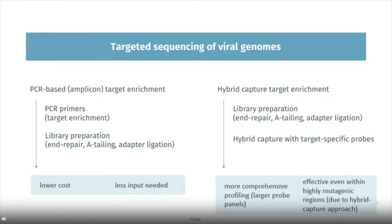Compared to amplicon approaches, enrichment through hybrid capture allows for dramatically larger probe panels with more comprehensive profiling of target regions. The oligoprobes used for hybrid capture-based target enrichment remain effective even within highly mutagenic regions, allowing targeting of rapidly evolving RNA viruses. Additionally, this method allows for near-complete sequence data of targeted regions and enables applications such as variant analysis for viral evolution and viral surveillance.